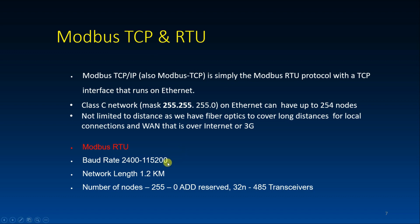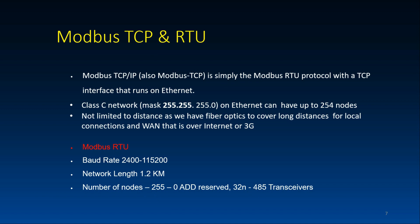For Modbus RTU, there are parameters to configure depending on the controller, such as baud rate and parity bit. The maximum cable length is 1.2 kilometers, though this also depends on the transmission speed. The maximum number of nodes is 255, but on each segment only 32 devices can be used, as this is limited by the RS-485 transceivers.